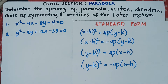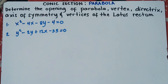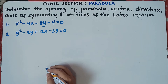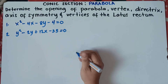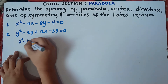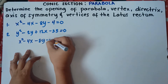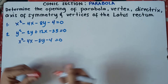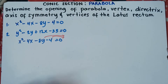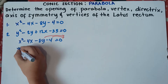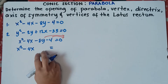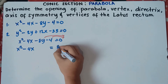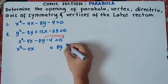Let's answer number one. The first thing to do is separate the variables — the Y variables and the constant. We transpose the Y and 4 to the right. Our equation is x squared minus 4x minus 8y minus 4 equals 0. We transpose the 8y from left to right, and also the 4. So our equation becomes x squared minus 4x equals 8y plus 4.